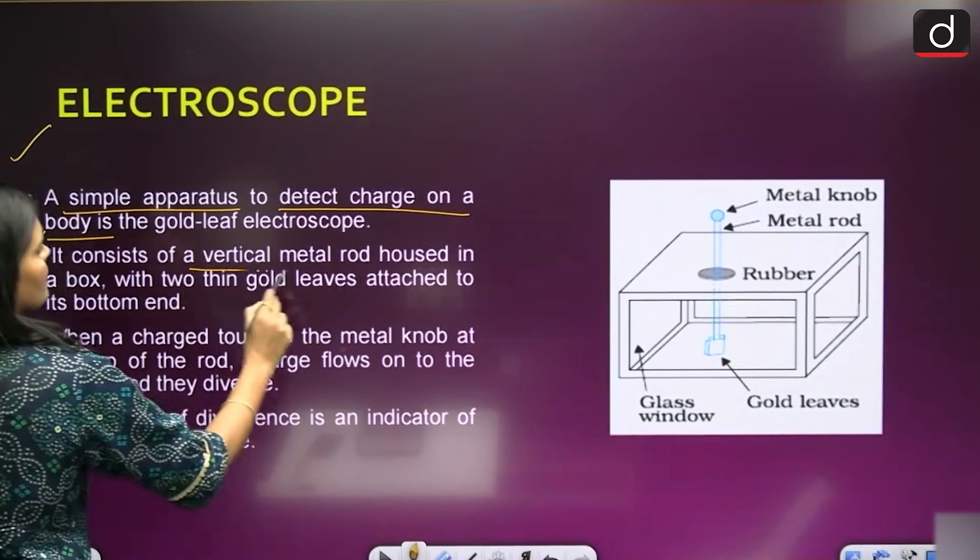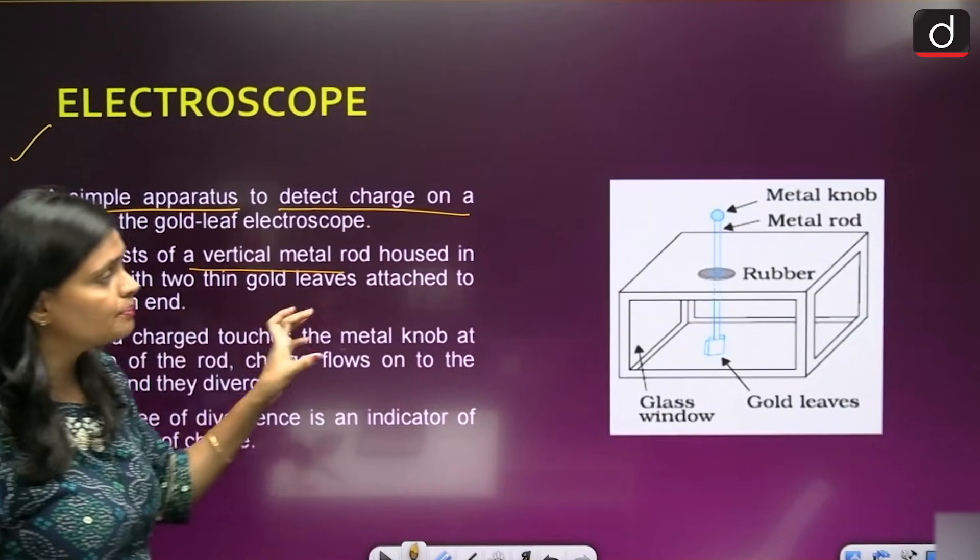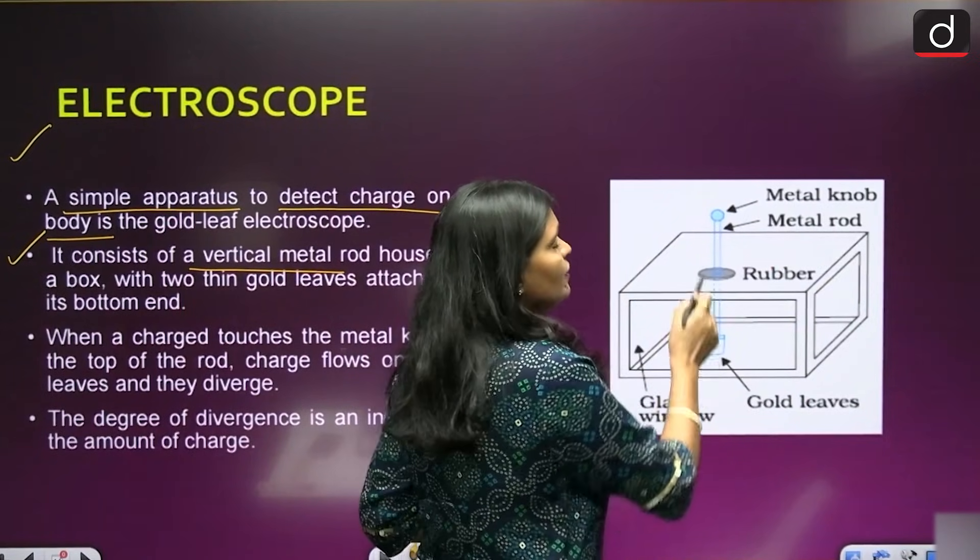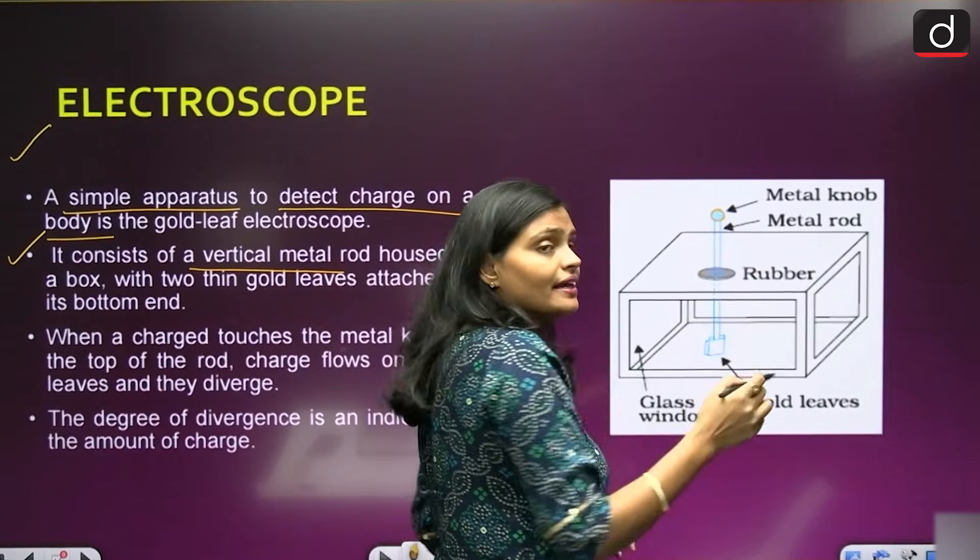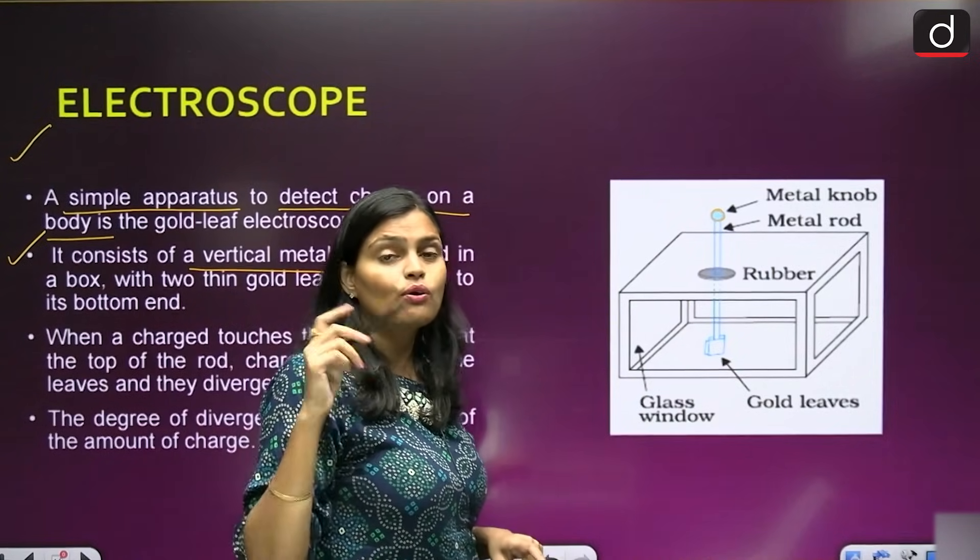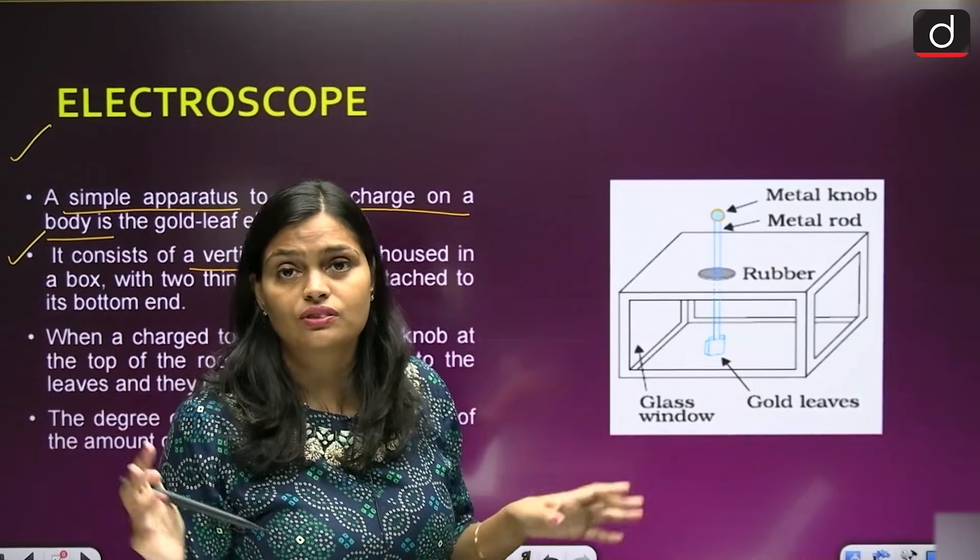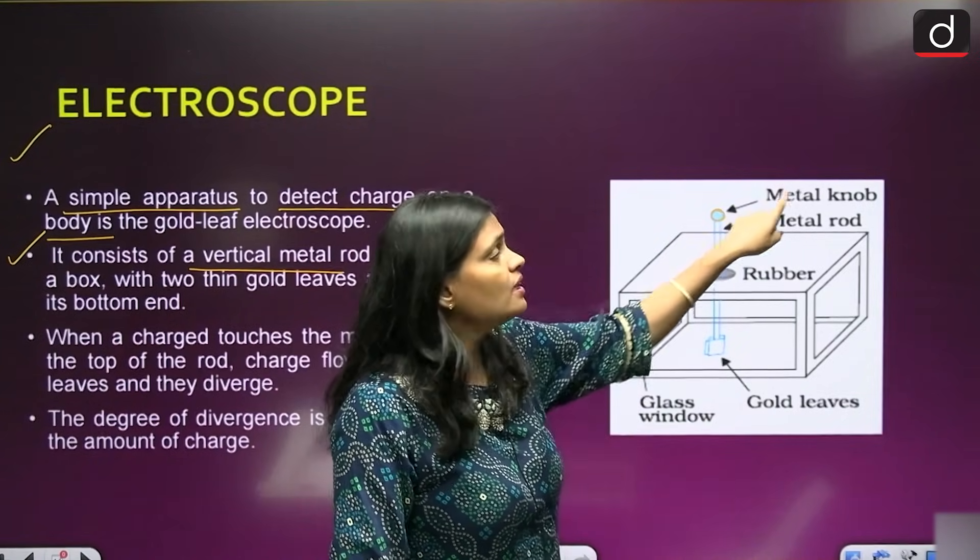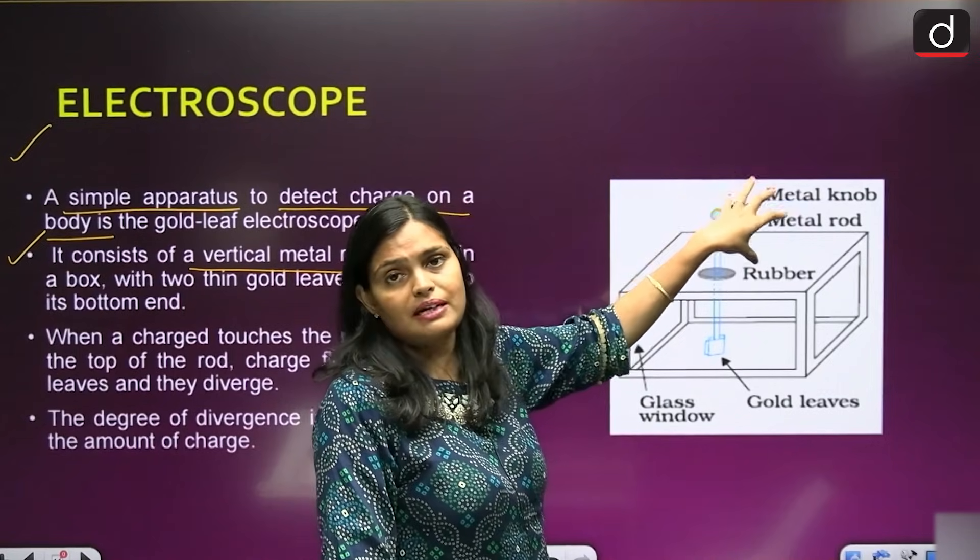It consists of a vertical metal rod housed in a box. Here you have a metal rod. And this metal rod, why we are taking metal rod? Because metals have free electrons. Always metals lose the electron, so they have free electrons. So we are using this metal rod which is connected with a metal knob. Above this rod, we have a ball-like structure called the metal knob.